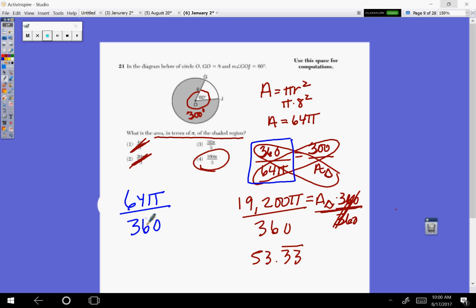So area of the whole to the angle that represents the whole, and that would be 360, equals the area of the sector to the angle that goes with it. In this case, it was 300. It doesn't matter, because the cross product is going to be the same.